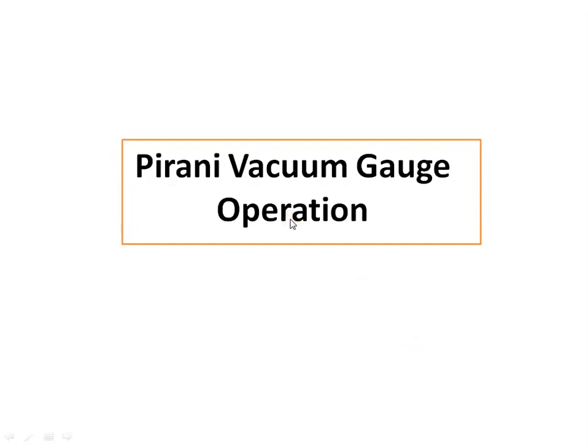In this video I will discuss the Pirani vacuum gauge operation. This vacuum gauge is widely used in industries for the measurement of pressure below the atmosphere, that is, vacuum.